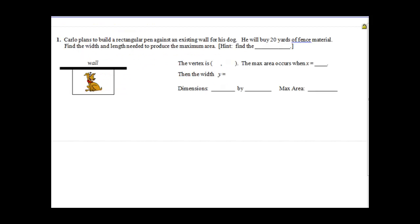Example: Carlo plans to build a rectangular pen against an existing wall for his dog. He will buy 20 yards of fence material. Find the width and length needed to produce the maximum area. Hint: find the vertex.